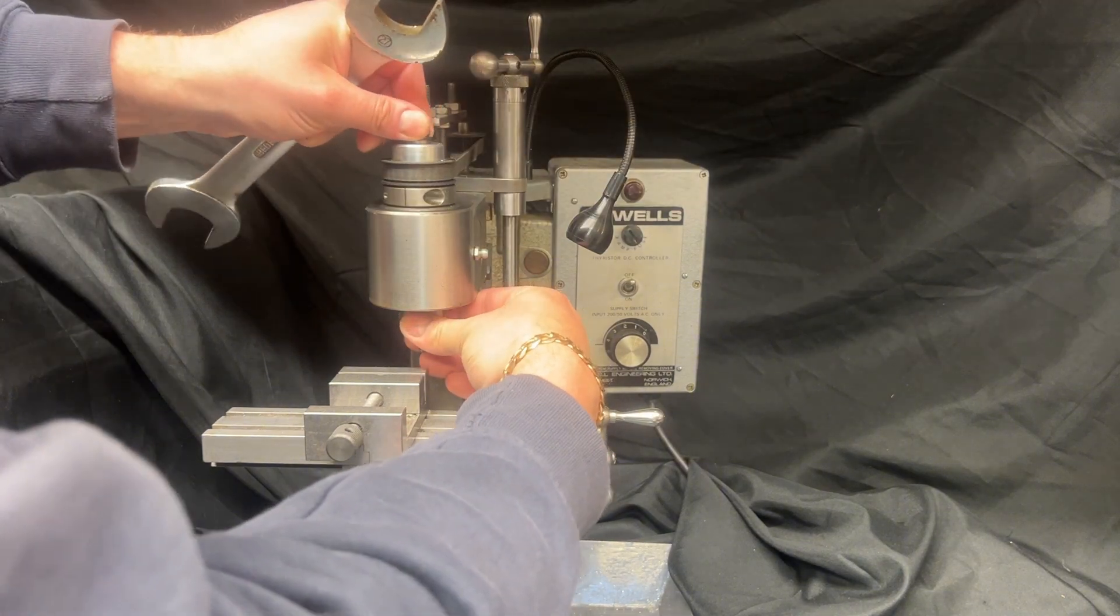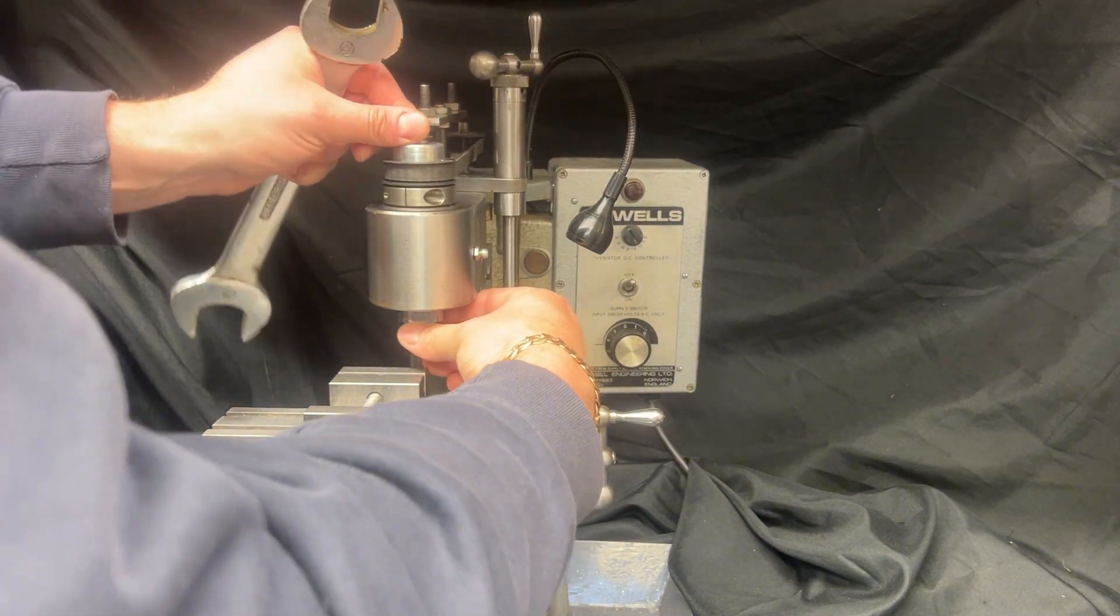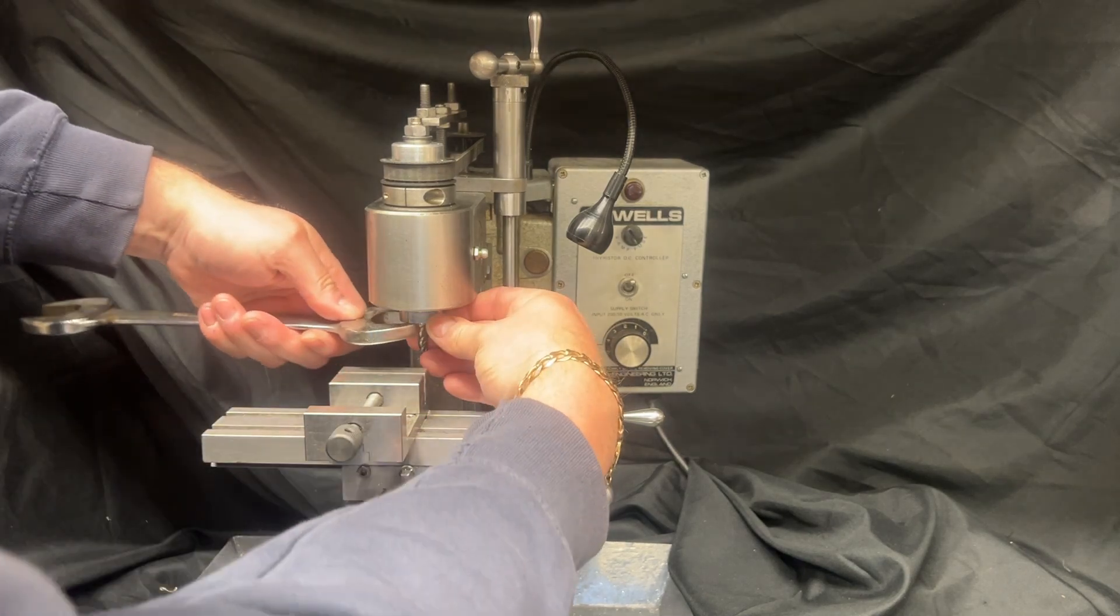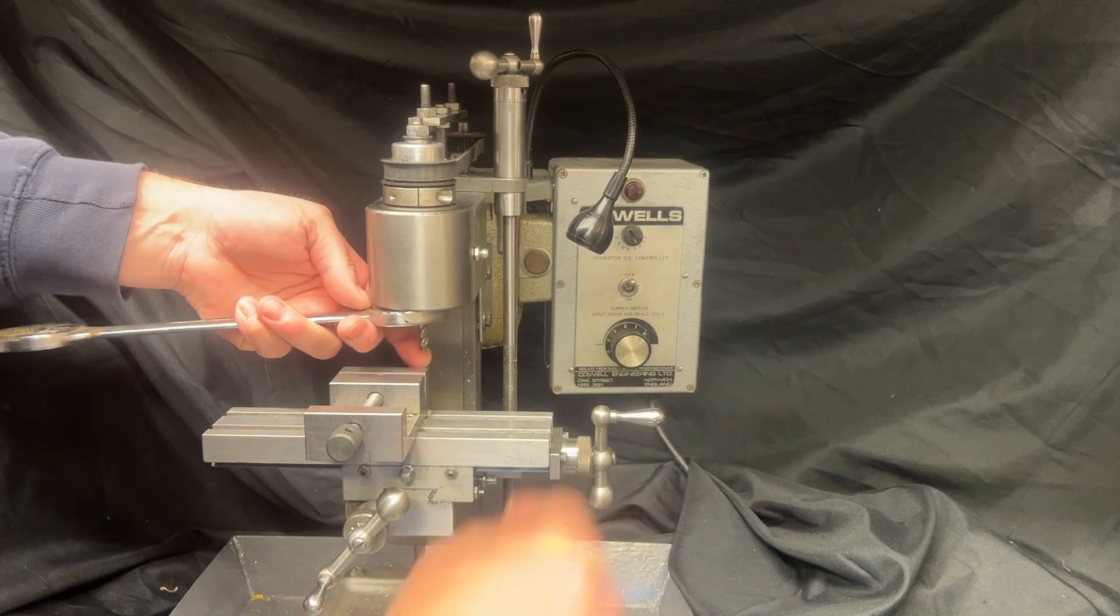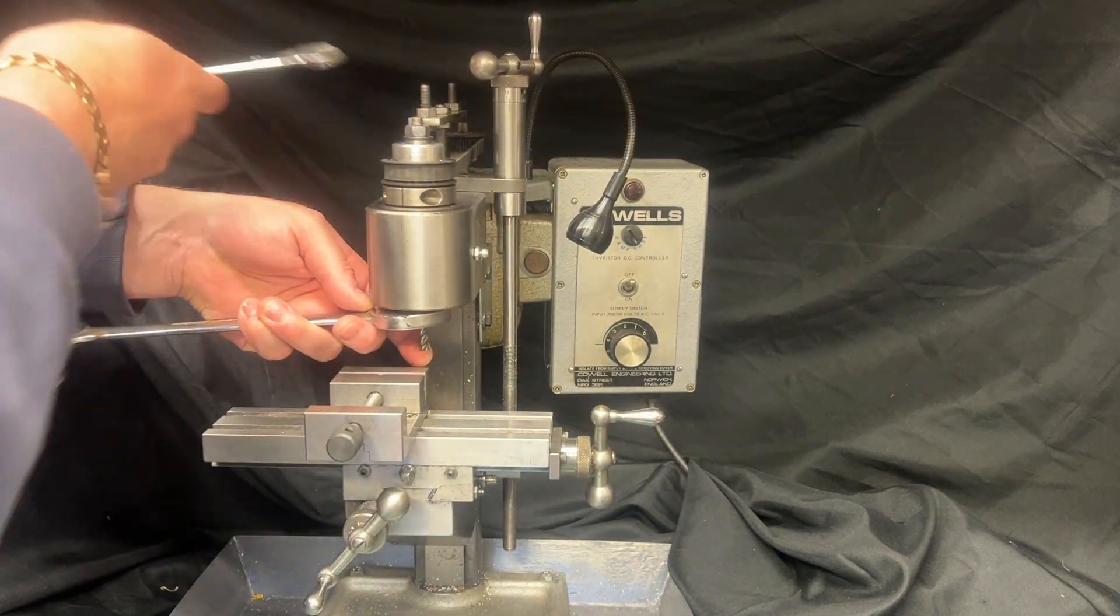The table is about six inches by four inches which is a generous size for a really small mill, and you get about 110 millimeters of travel on the x-axis and 80 millimeters on the y and about 90 millimeters in the vertical.